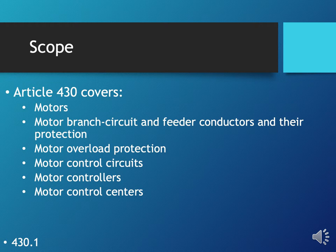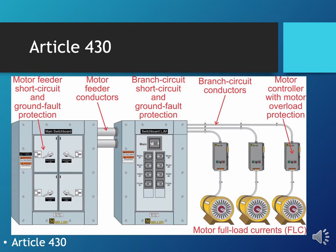What is in Article 430? The scope, section 430.1, tells us that Article 430 covers motors, motor branch circuit and feeder conductors and their protection, motor overload protection, motor control circuits, motor controllers, and motor control centers.